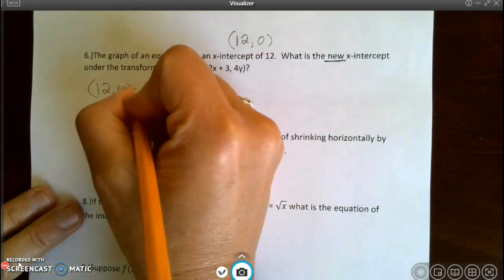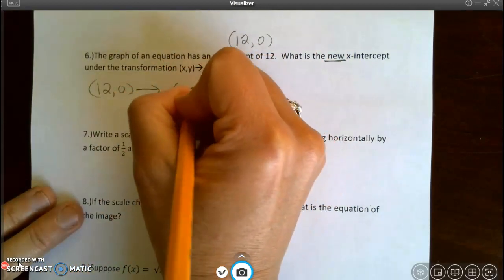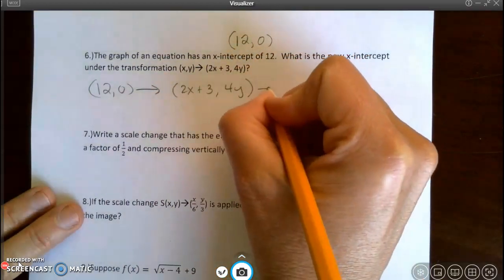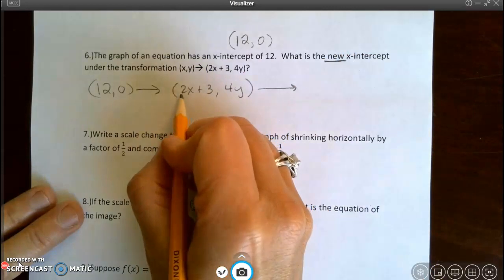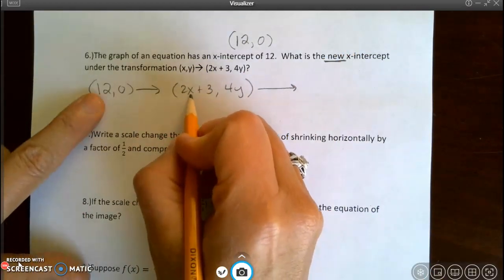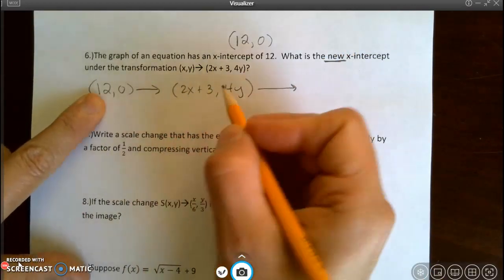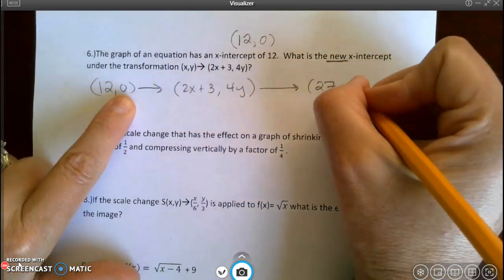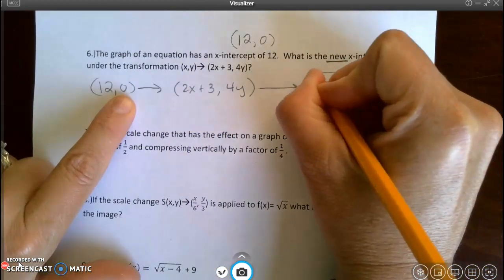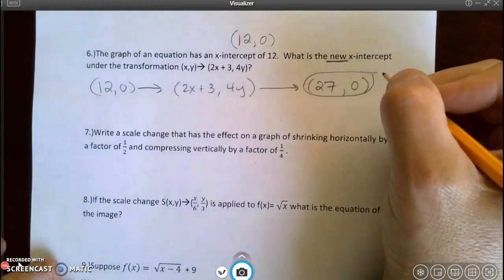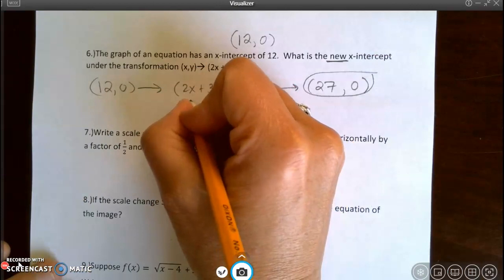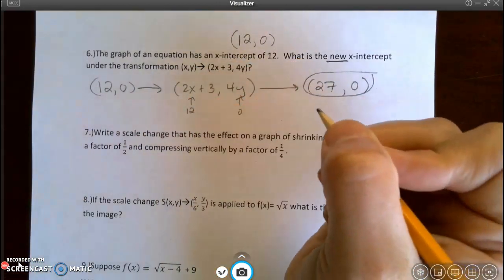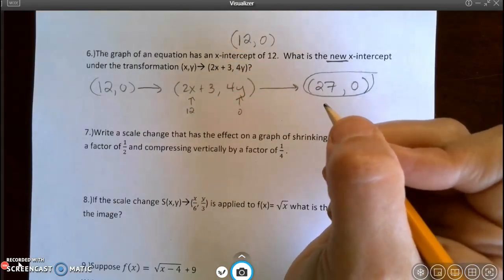So what do I get? 2 times 12 is 24, plus 3 is 27. 4 times 0 is simply 0. So there's my new ordered pair. All I did was put a 12 in here and a 0 in here to get the new ordered pair.